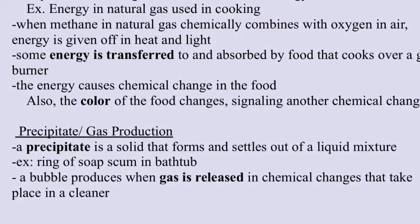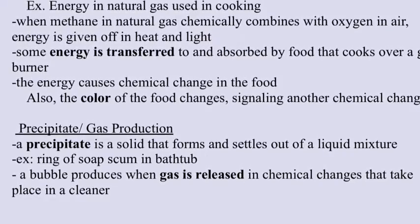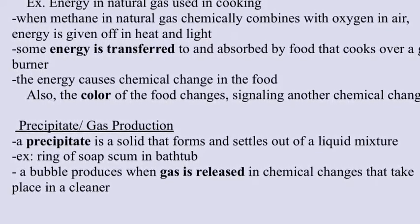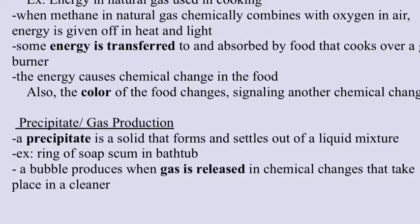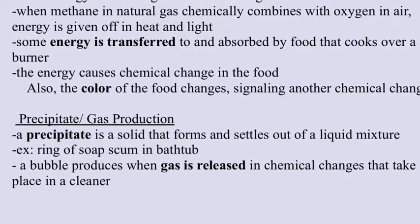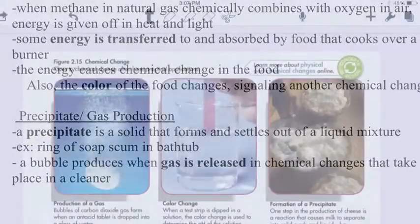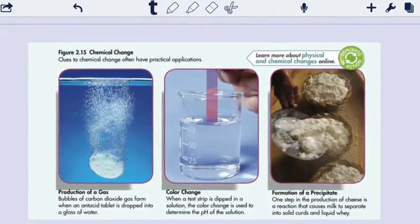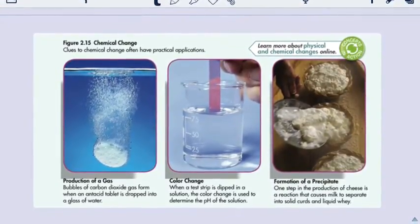The precipitate and gas production: a precipitate is a solid that forms and settles out of a liquid mixture — for example, the ring of soap scum in a bathtub. A bubble produces when gas is released in chemical changes that take place in a cleaner. The only way to be sure a chemical change has taken place is to test the composition of a sample before and after the change.